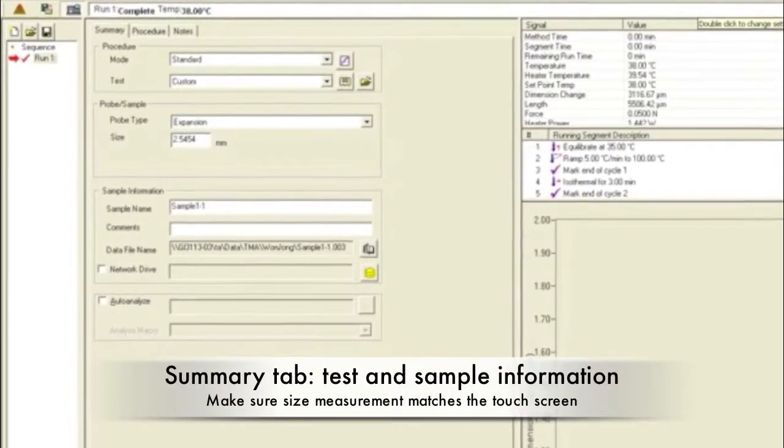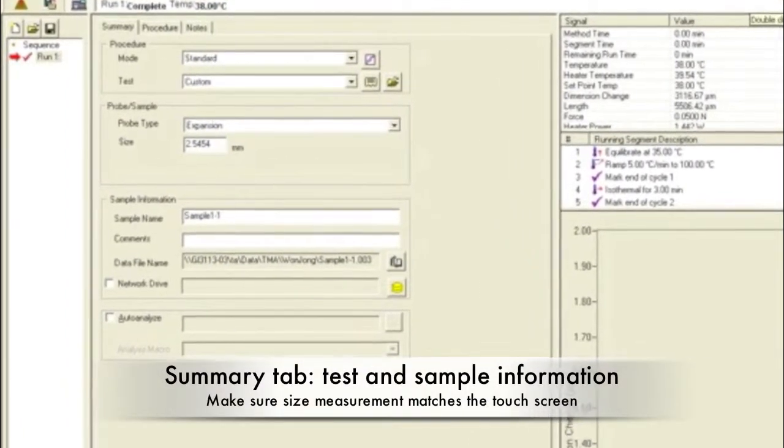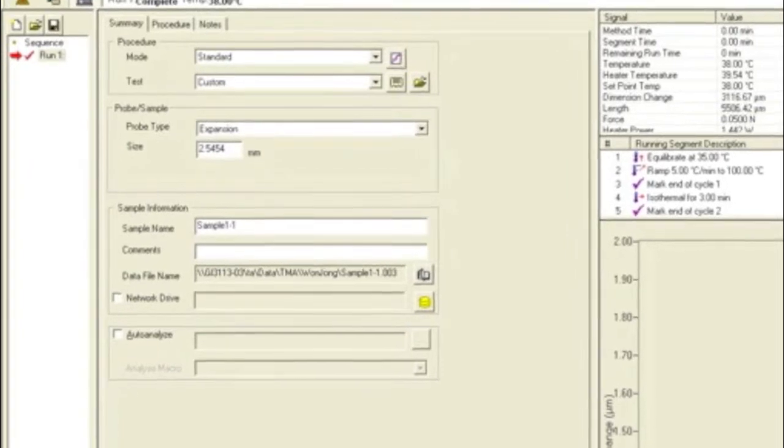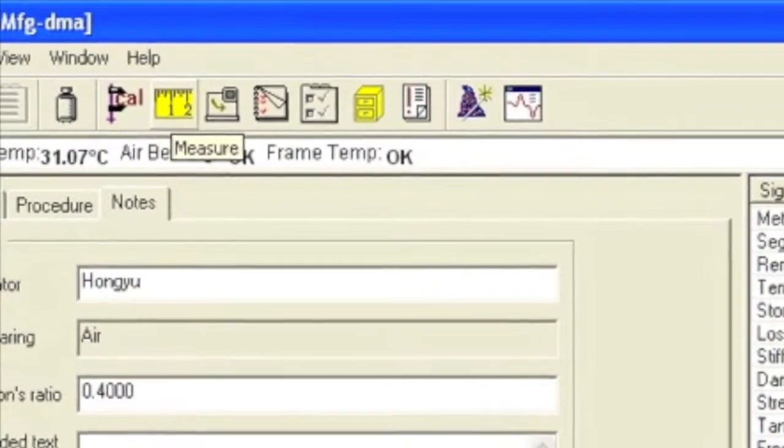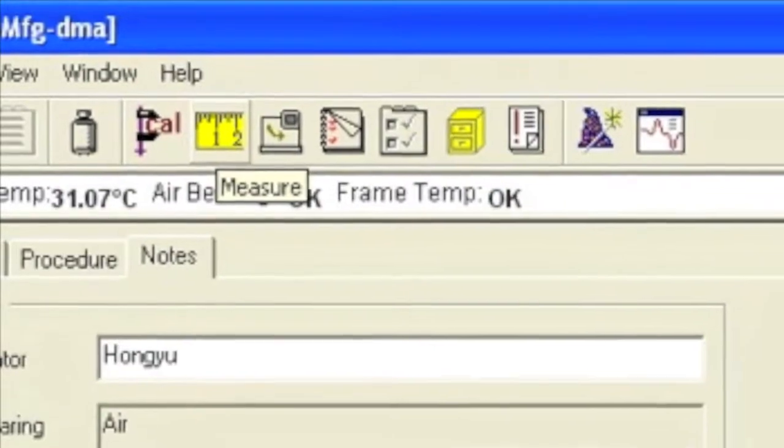In the Summary tab, specify the test as custom and the probe type as expansion. Make sure the size matches the measurement specified on the instrument screen. If the values are different, hit the measure button at the top of the screen.